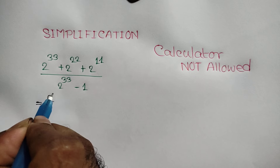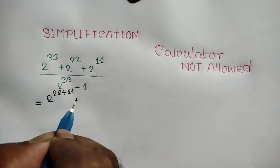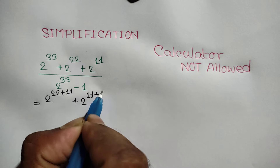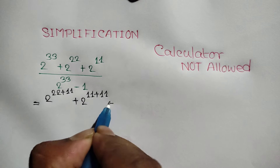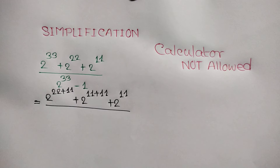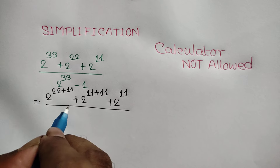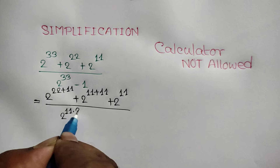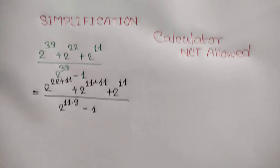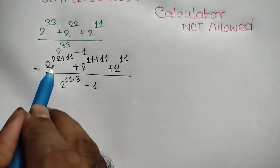We can rewrite the exponents: 2 to the power 33 can be written as 2 to the power 22 plus 11, and 2 to the power 22 can be written as 2 to the power 11 plus 11. The denominator 2 to the power 33 can be written as 2 to the power 11 times 3, minus 1.